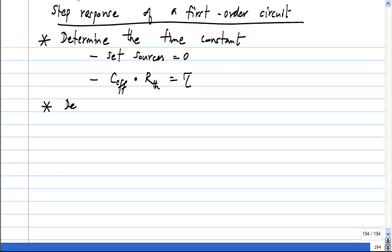And then you determine value at t equals zero minus. This is from initial conditions and some regular circuit analysis.